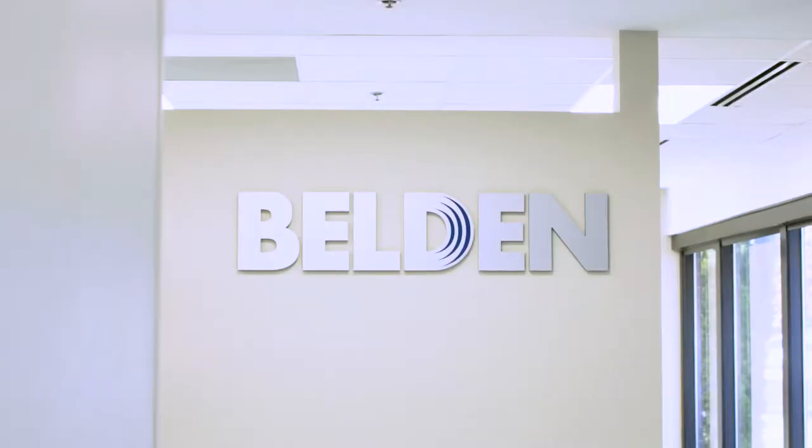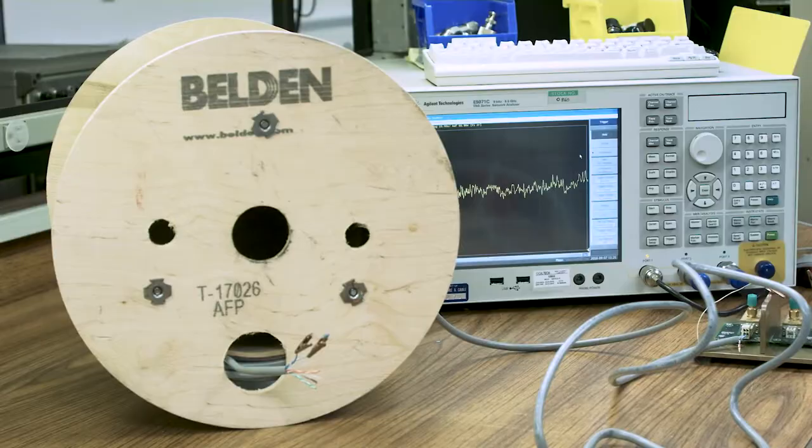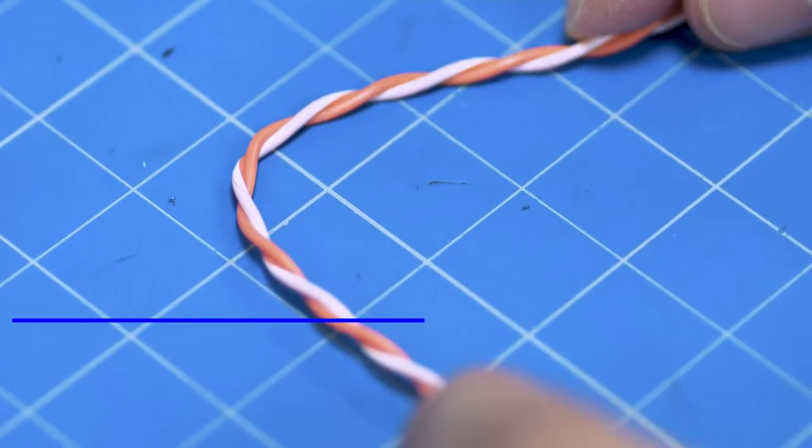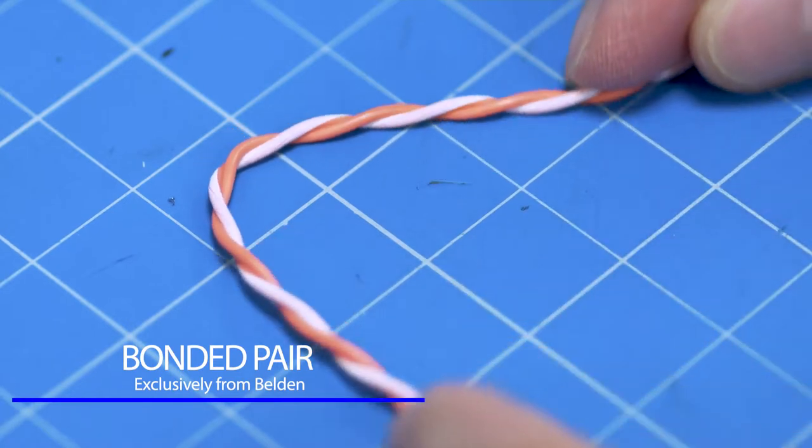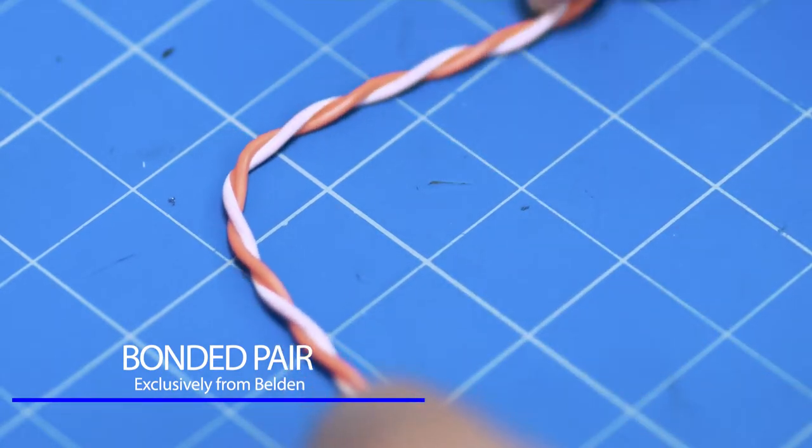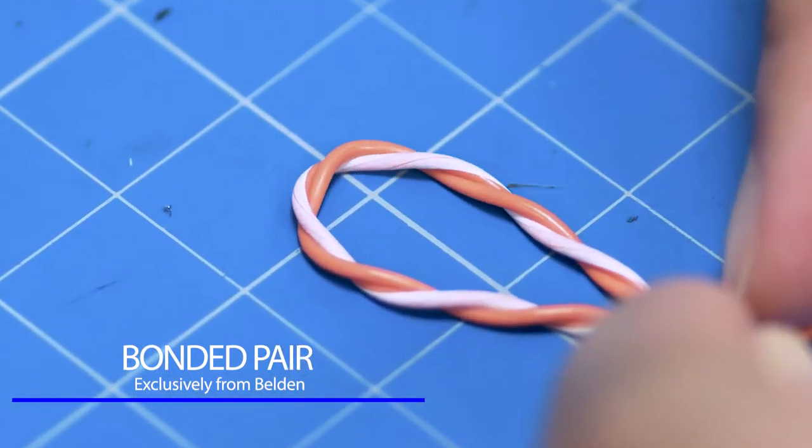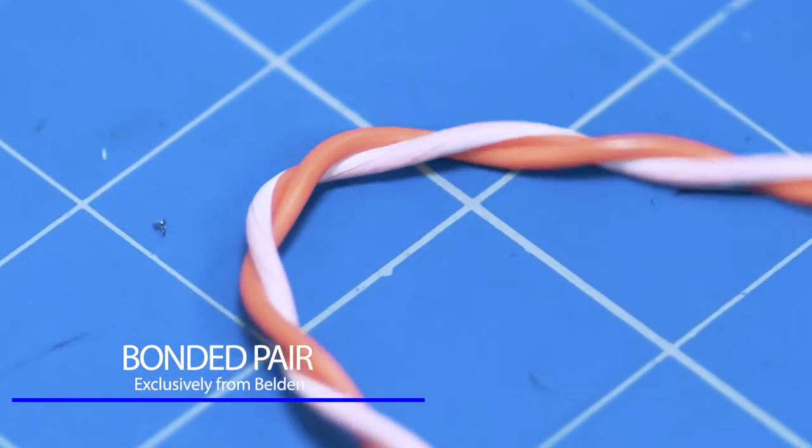At Belden, we believed we could do something about this performance issue. So we developed a unique patented technology called bonded pair that ensures no gap between any twisted pair, no matter the twisting, looping, bending, or manipulations.